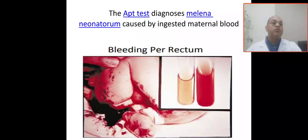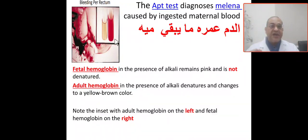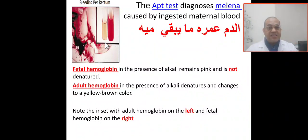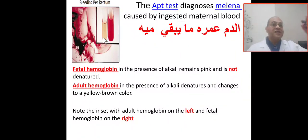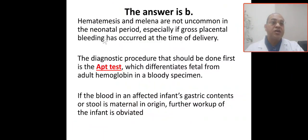You manage the baby conservatively. To summarize the Apt test: fetal hemoglobin resists the alkali and remains pink — blood from the baby. If the blood changes to yellow-brown and denatures — this is adult hemoglobin — indicates maternal blood, and no further workup is needed. Be conservative with the baby.